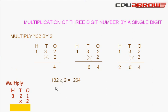So, 132 multiplied by 2 is equal to 264. We take another example.